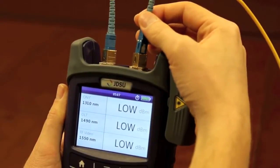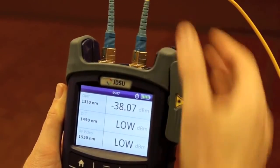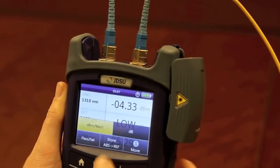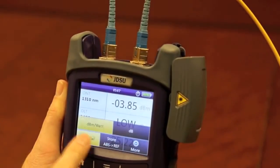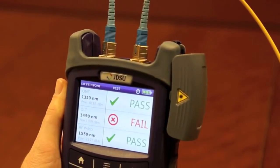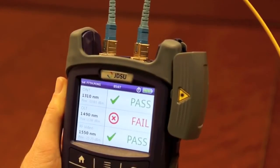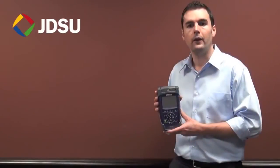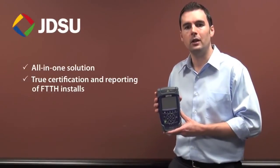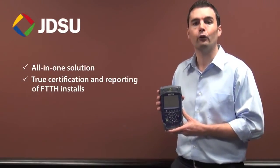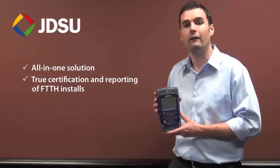Through-mode capability allows the user to simultaneously measure voice, data, and video signals on fiber at 1490 and 1550 nanometers downstream and 1310 nanometer burst mode upstream. The integration of connector certification and PON measurements makes a unique all-in-one solution for true certification and reporting of FTTH installs.